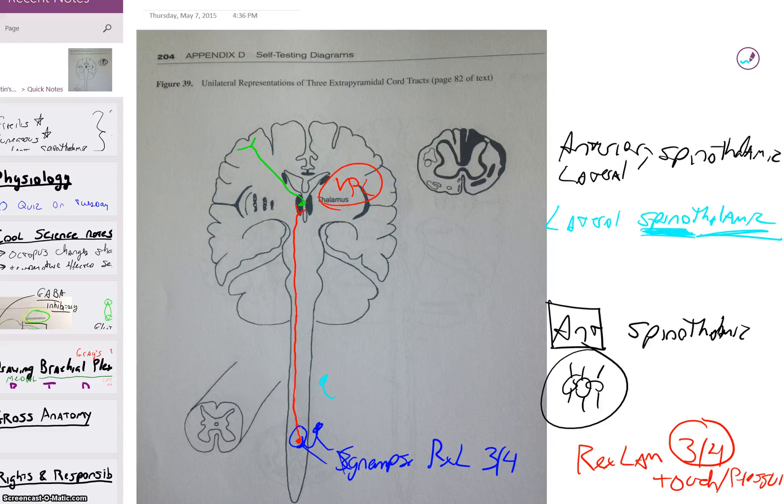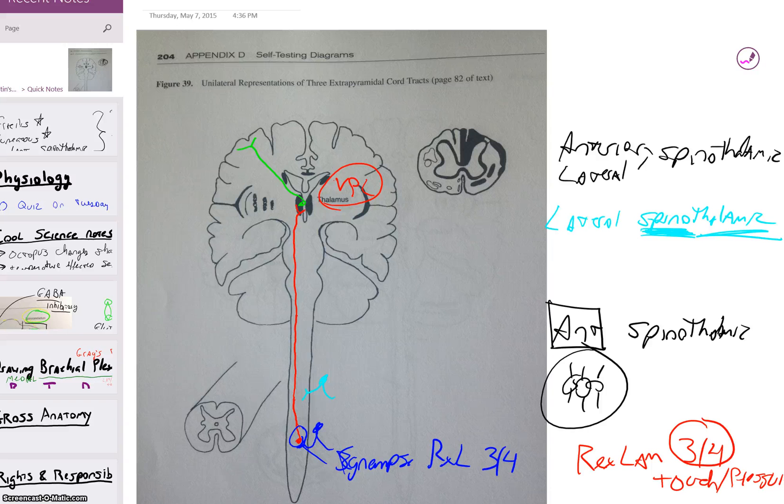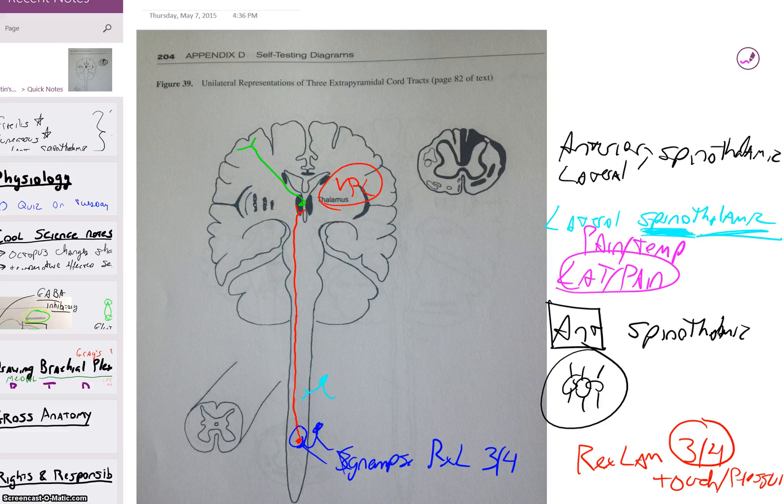It is very similar to the anterior. Cell body on the outside, comes in, quick little synapse. Synapse is in a slightly different place, because we're no longer dealing with light touch and pressure. The lateral spinothalamic is dealing with pain and temperature. Lateral, pain. For some reason, those two words make sense to me. Lat, pain. They go together. Lateral spinothalamic deals with pain and temperature feeling. So the second one synapses in Rexed lamina II.